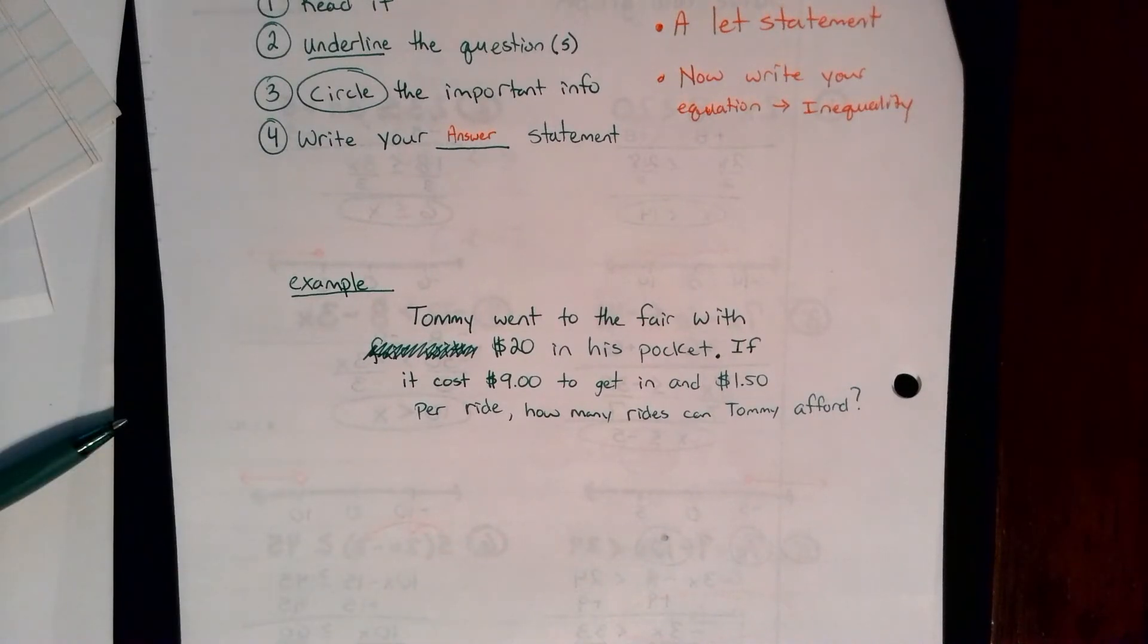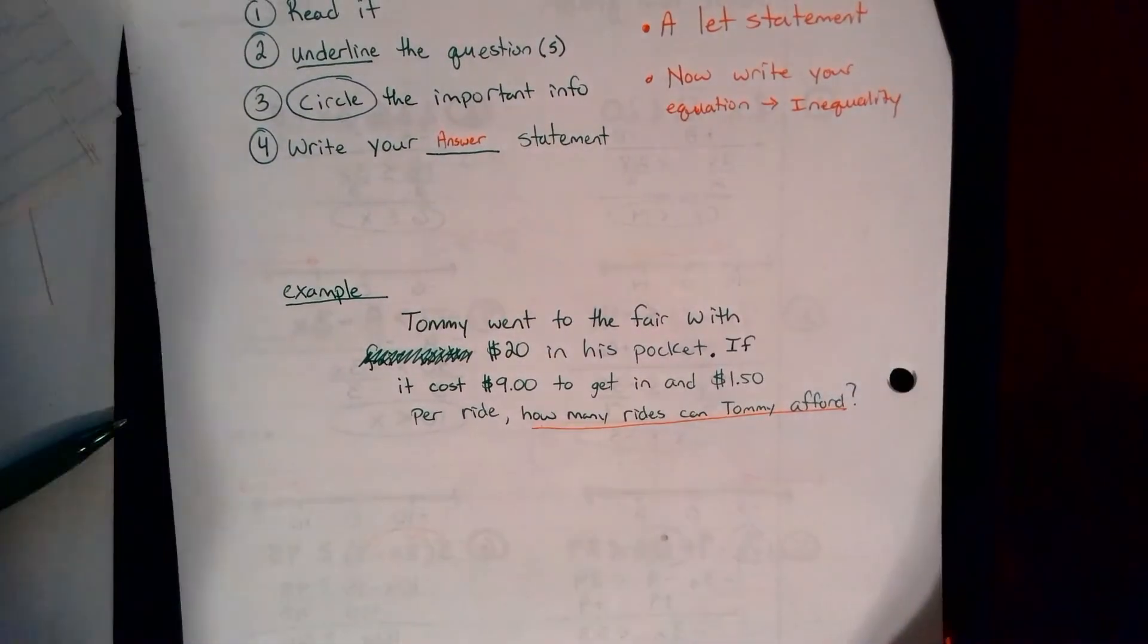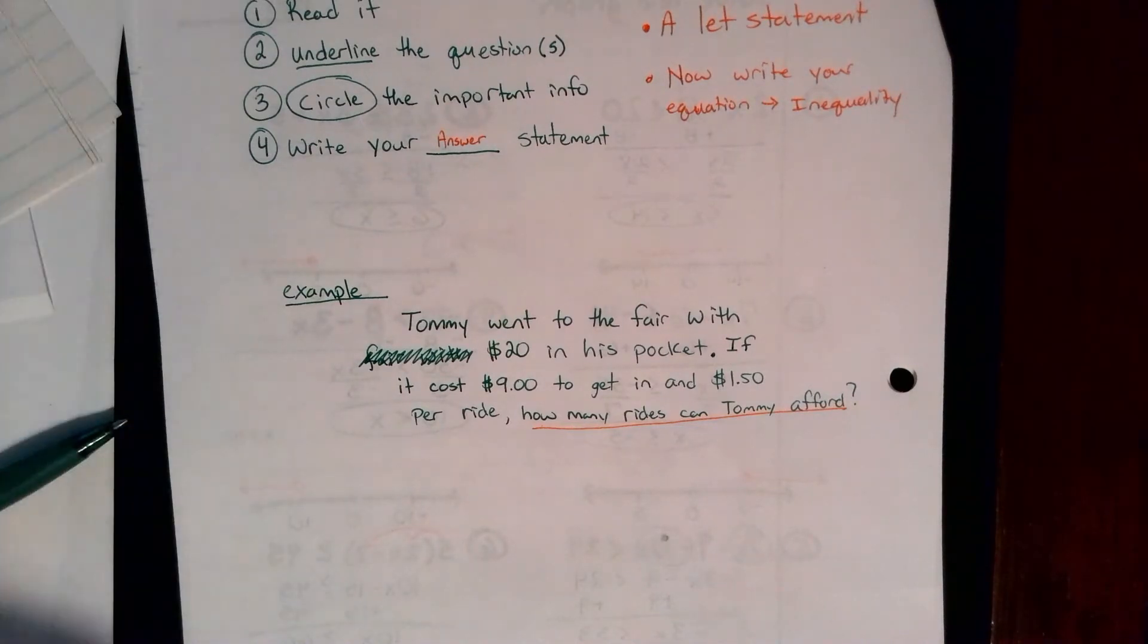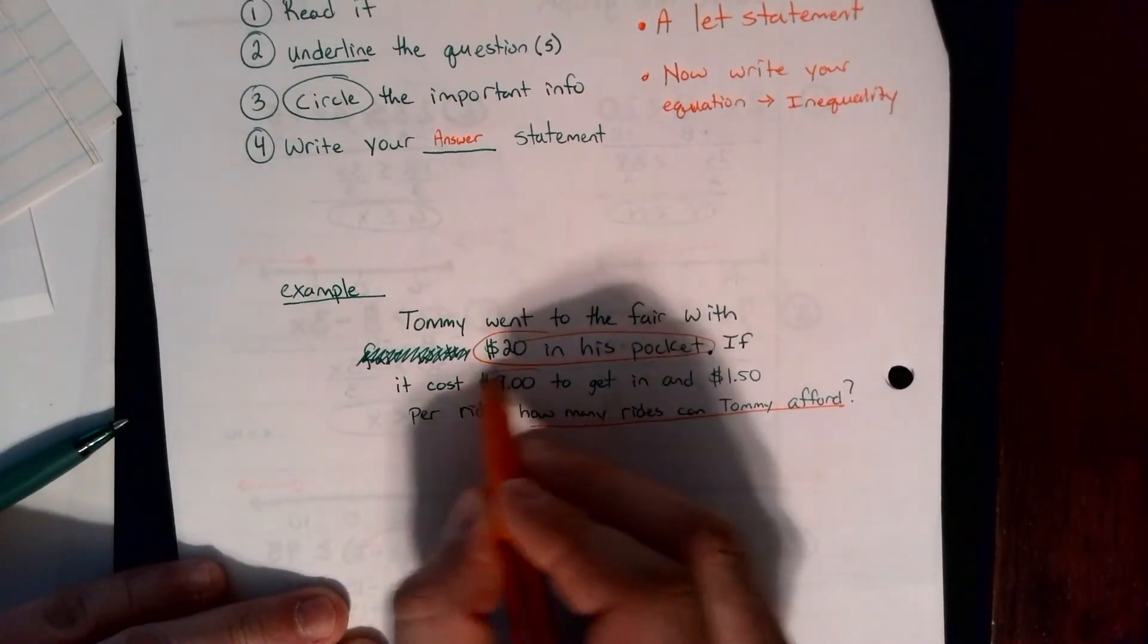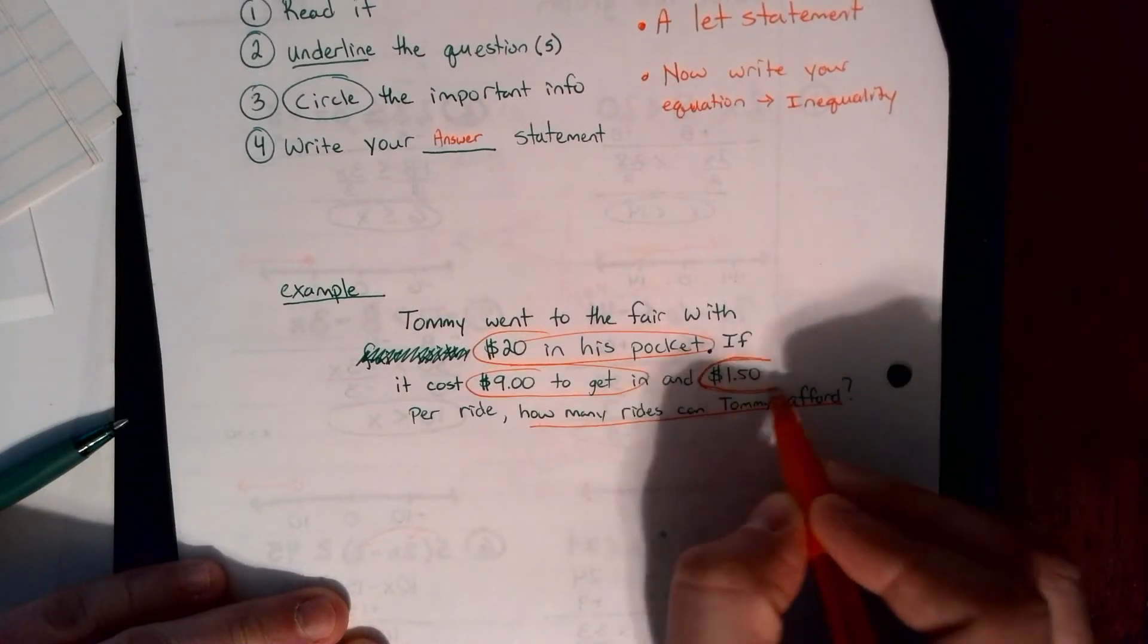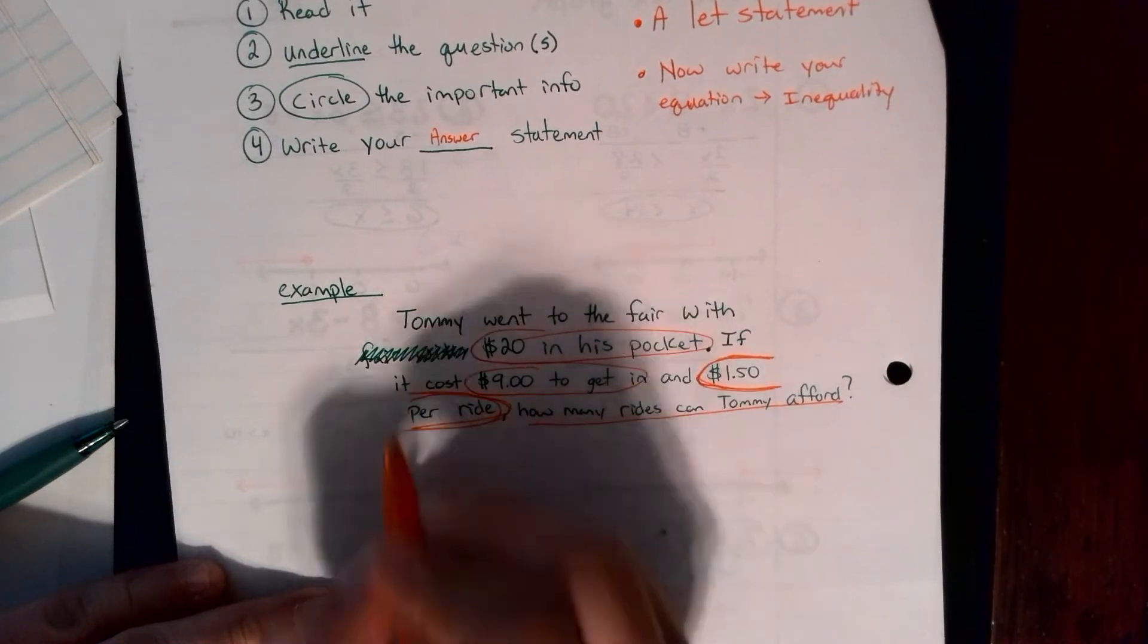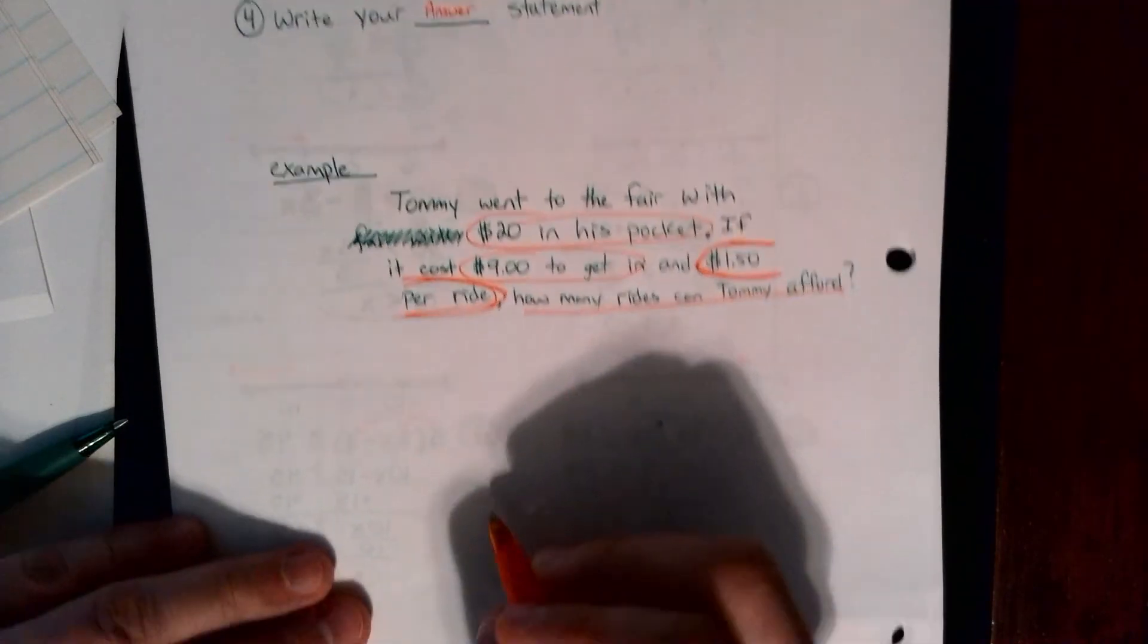If it cost $9 to get in and $1.50 per ride, how many rides can Tommy afford? That's our word problem. So we just read the whole problem. Two, underline the question. It's right here. How many rides can Tommy afford? So they're talking about, we want to know how many rides and afford means it's going to involve money. Well, some of the important information. He had $20 in his pocket to start with. It cost $9 to get in. And $1.50, I have to make like a half circle here. $1.50 per ride. That's important. $1.50 per ride.